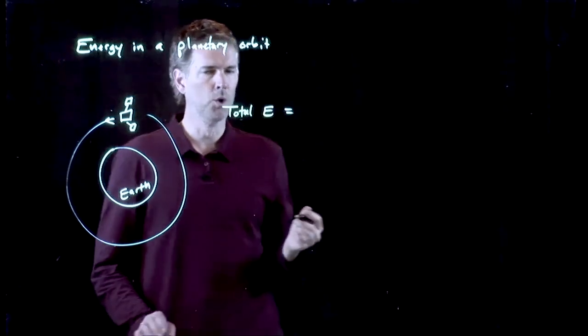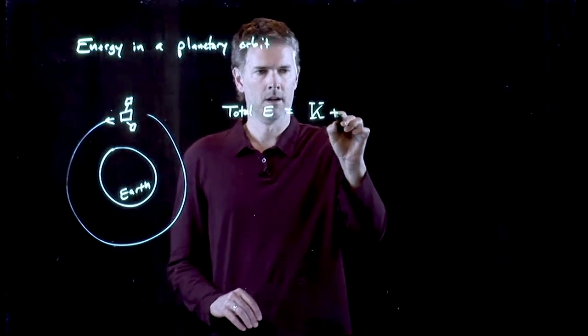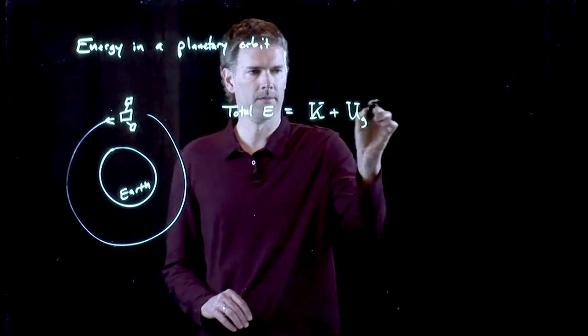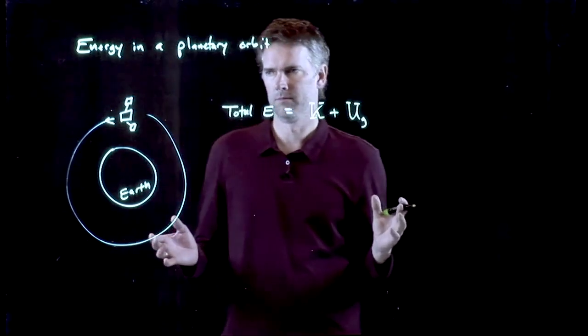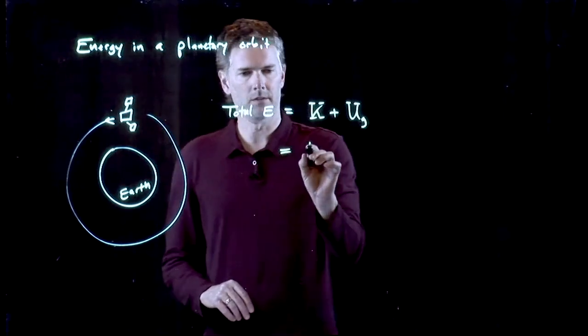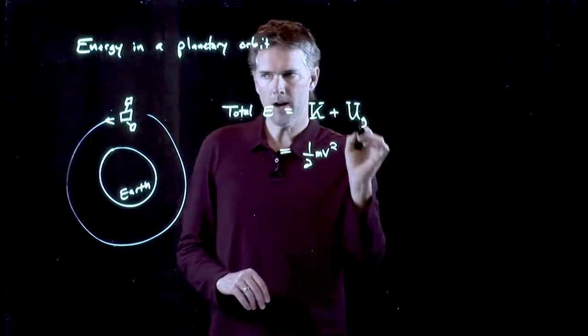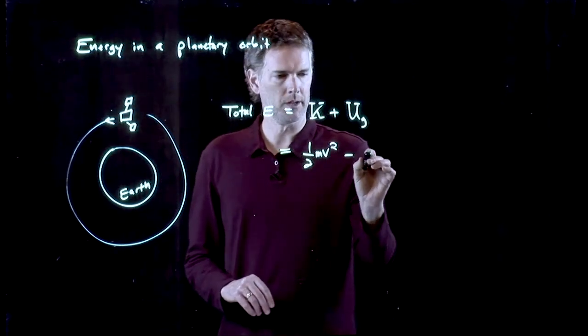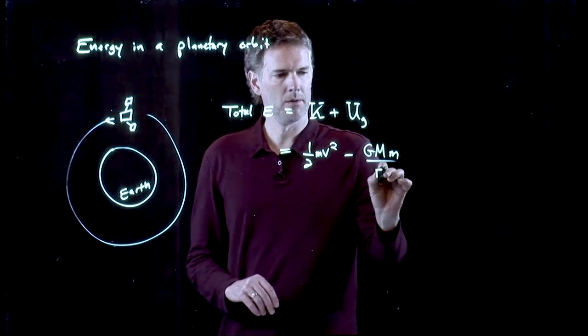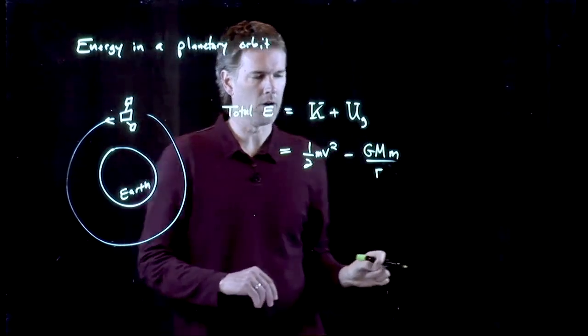Well, it's moving, so it has kinetic energy. It's in a gravitational field, so it has potential energy. And that's it. But we know exactly what kinetic energy is. Kinetic energy is one-half mv squared. And now we know what gravitational potential energy is. It's GMm over r. Not squared, just over r.